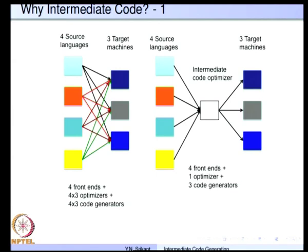Now the big question that needs to be answered properly: why do we require intermediate code at all? The other option is to just write a compiler for source language A targeting machine X directly. Let us look at the implications — if there are 4 source languages and 3 target machines and we want to implement all 4 languages on all 3 machines.